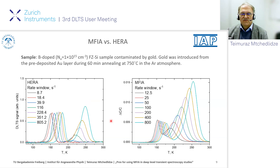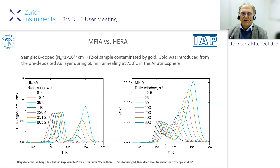In both cases, we see two signals: the low-temperature signal, which belongs to the gold donor in p-type silicon, and a high-temperature signal. The spectra are presented for similar rate windows. The results of the standard procedure of DLTS peak evaluation are presented on the next slide.